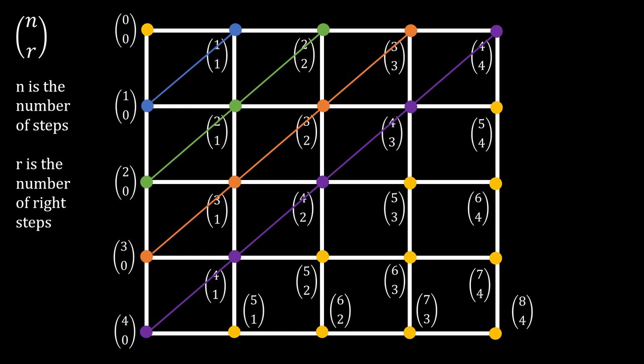But, also notice that the points in the diagonal increments in the bottom number or the number of right steps. To understand this, let's only consider the purple diagonal here.